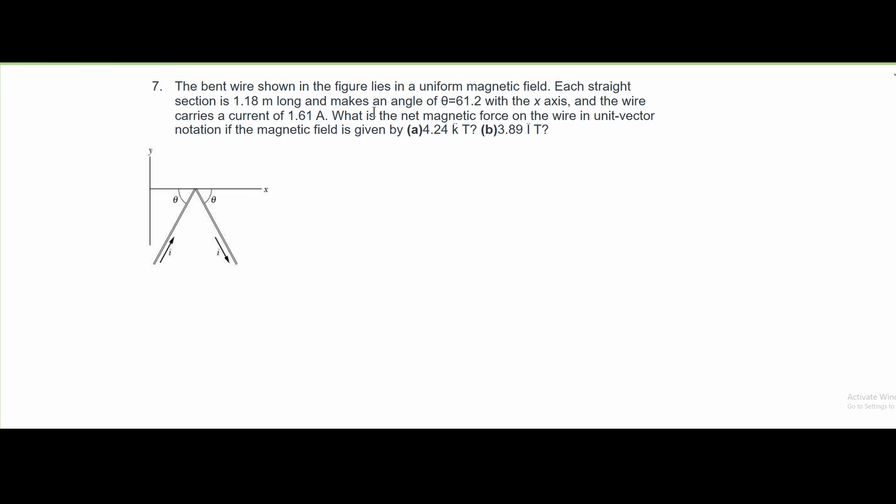We have the bent wire shown in the figure that lies in a uniform magnetic field. Each straight section is 1.18 meters long and makes an angle of 61.2 degrees with the x-axis.